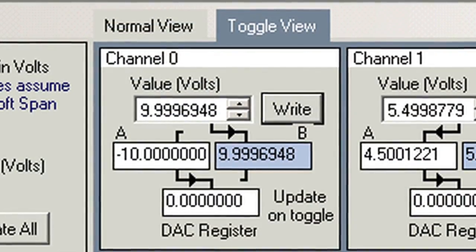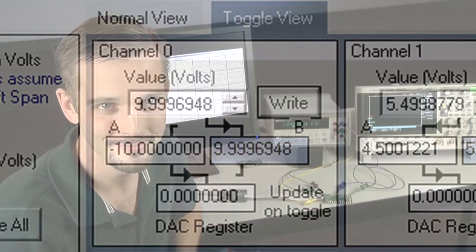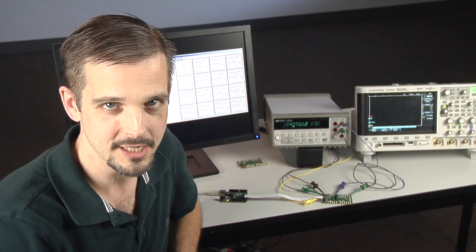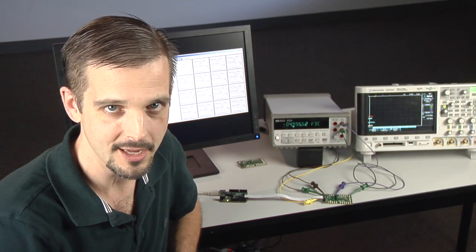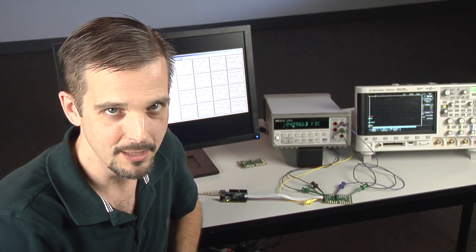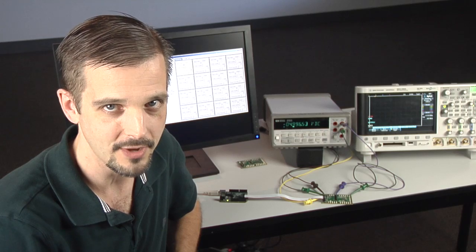The toggle view allows the A and B registers for each DAC to be loaded. Toggling is particularly useful for transducers that require AC excitation often with minimal DC content. I've set the output of channel 0 to the 10V bipolar range with the A and B registers loaded with 5V and minus 5V.